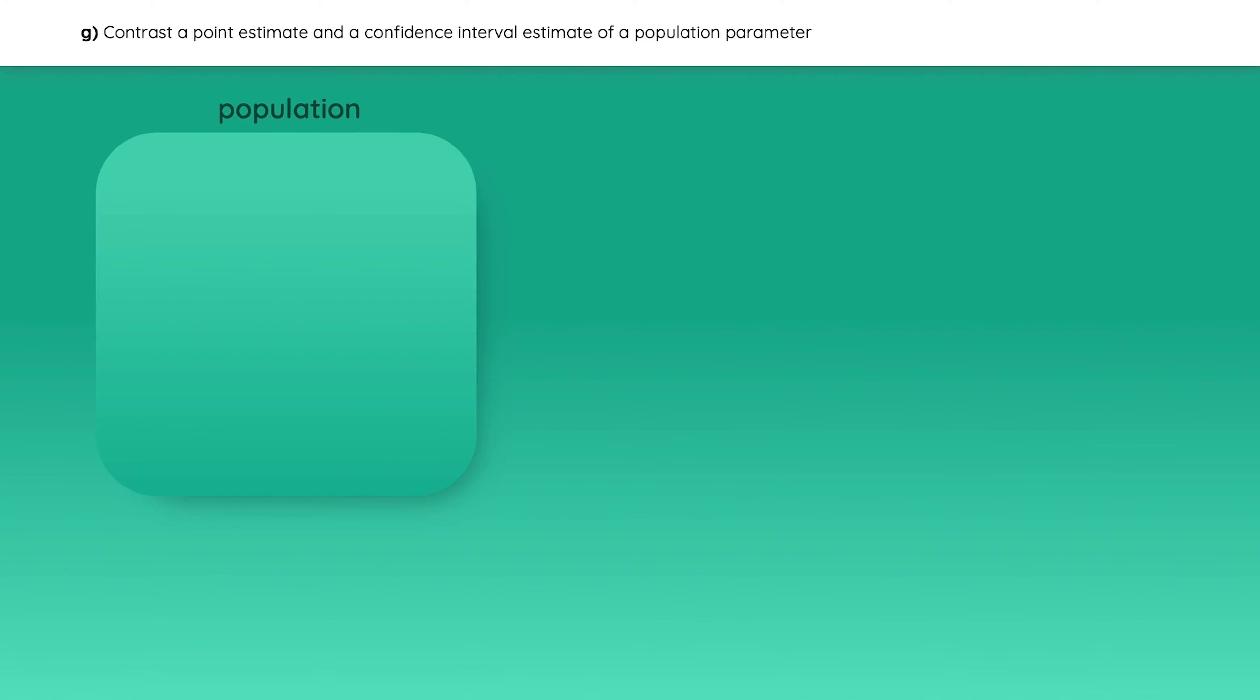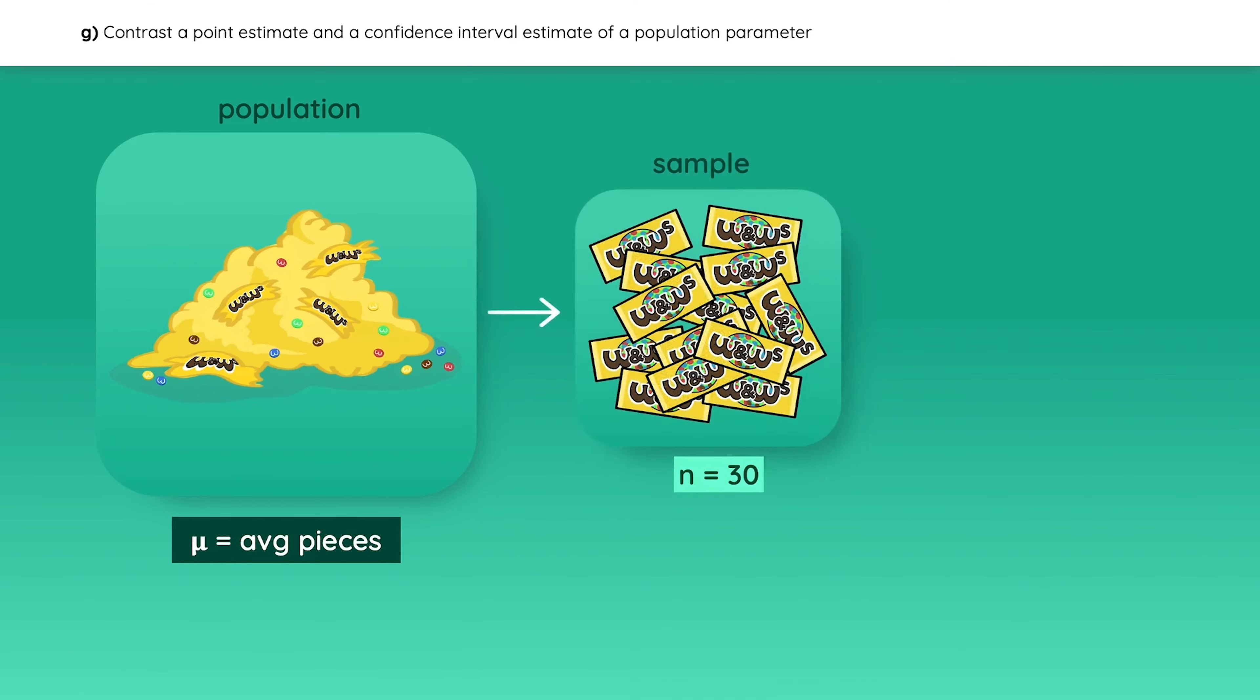Now, let's look at a hypothetical scenario which will make the next few concepts easier to remember. Imagine that you work for a candy factory that makes thousands of packages every single day. Your boss is worried that the packaging machine is not being very consistent, so he wants you to figure out what is the average number of pieces in each packet. You're obviously not going to open every single packet to take an average, so instead, you take a sample of 30 packets. You then count the number of pieces in each one, and you average them to get the mean of the sample. This formula, which you use to arrive at the sample statistic, is called the estimator, and the answer is called the point estimate.